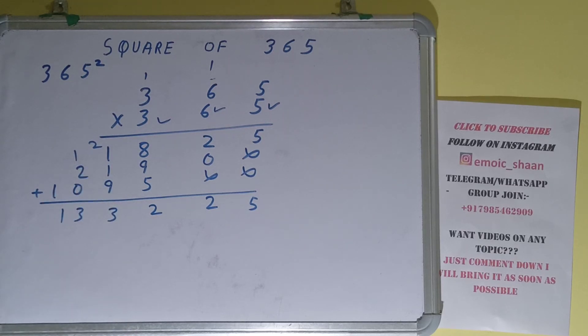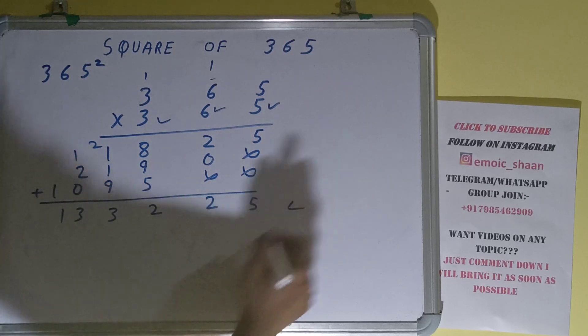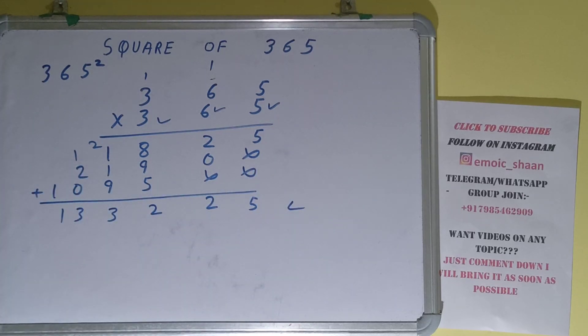The answer will be 133,225. Now it will be square for the number 365. So this is all. If you found the video helpful, please click the like button, do consider subscribing, and thanks for watching.